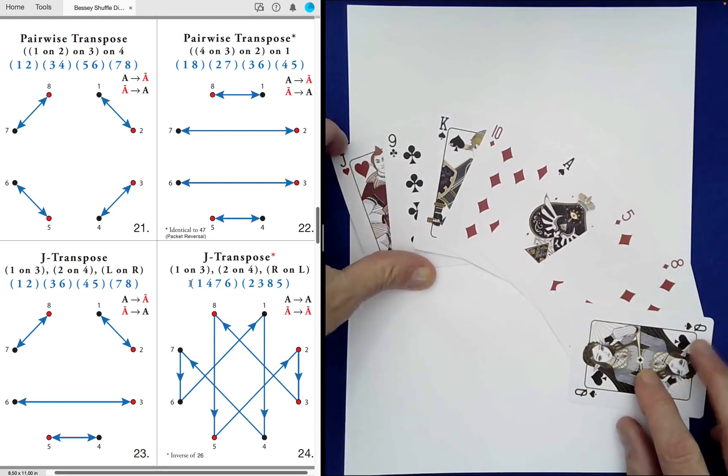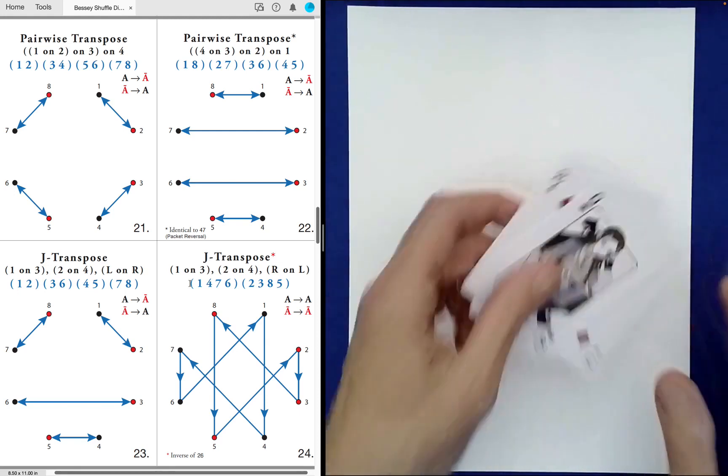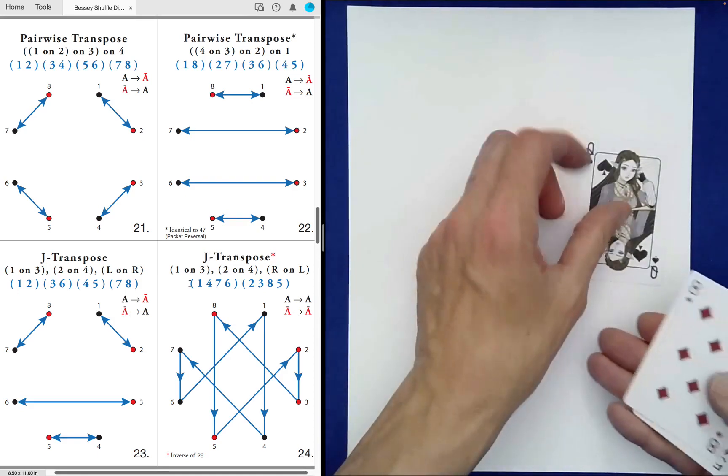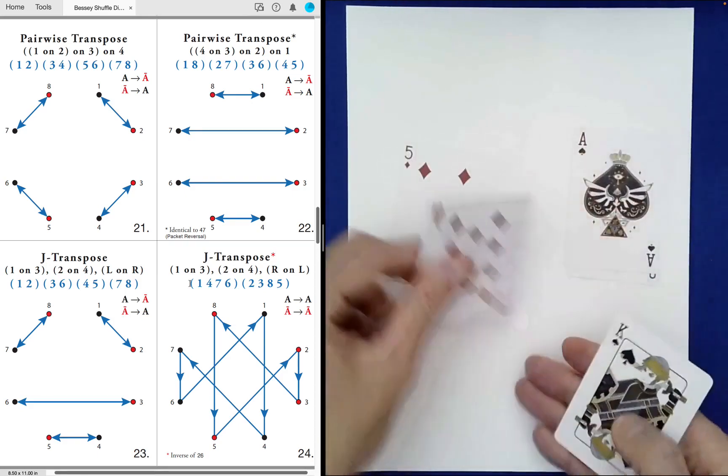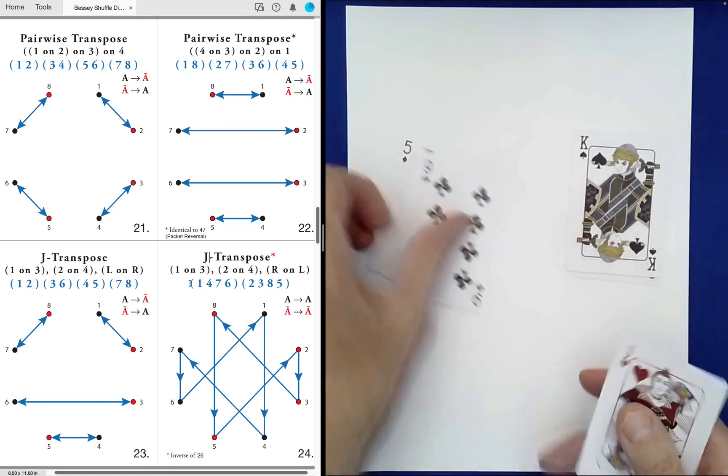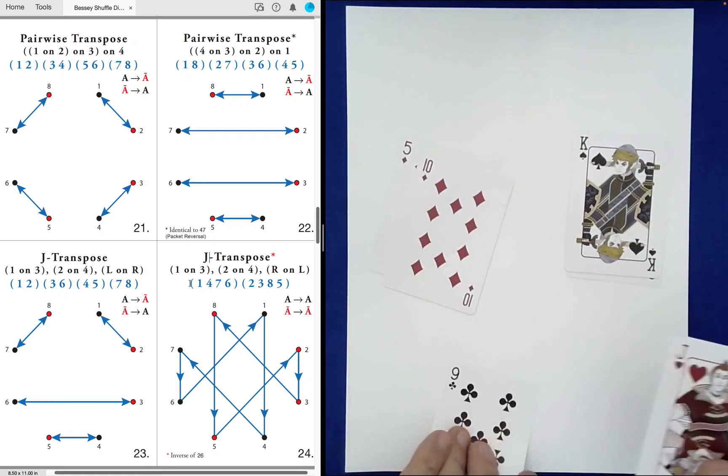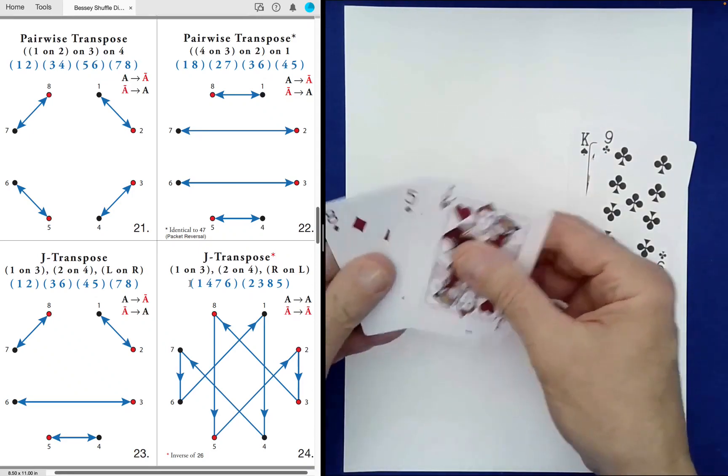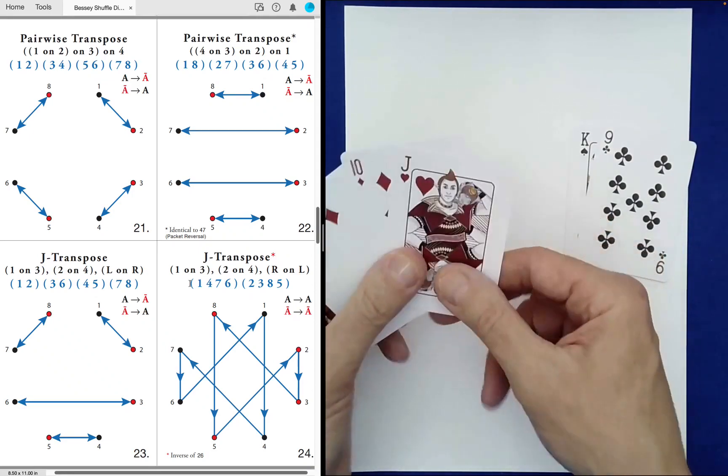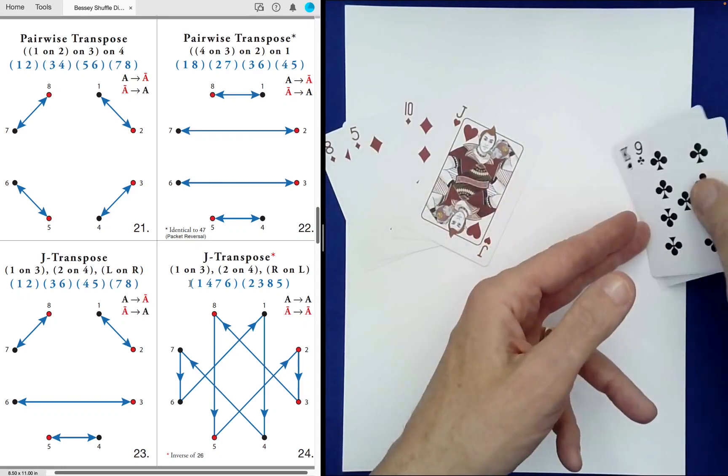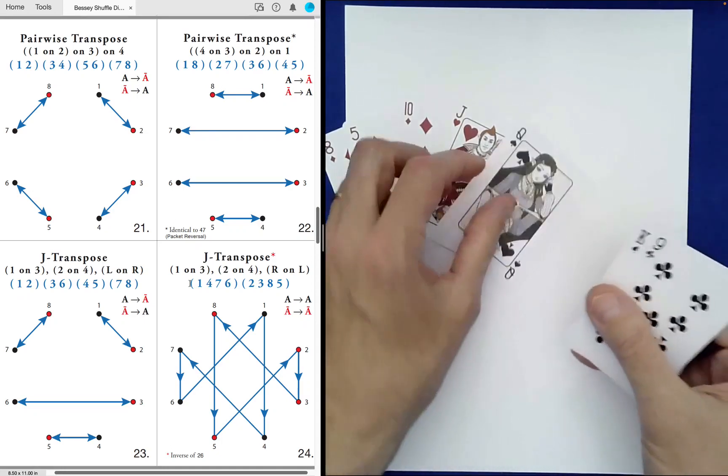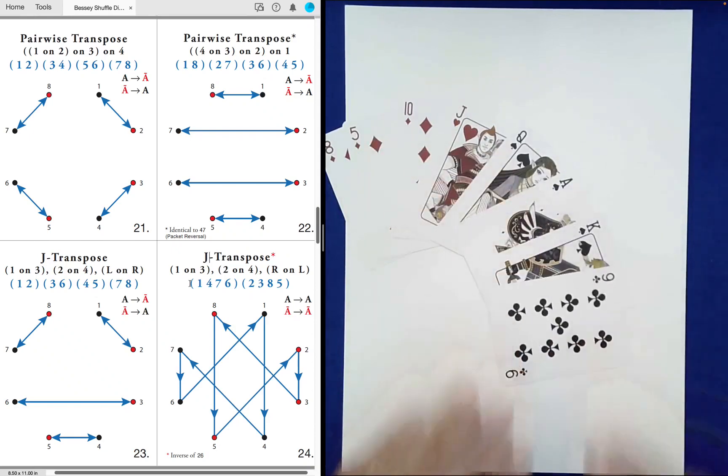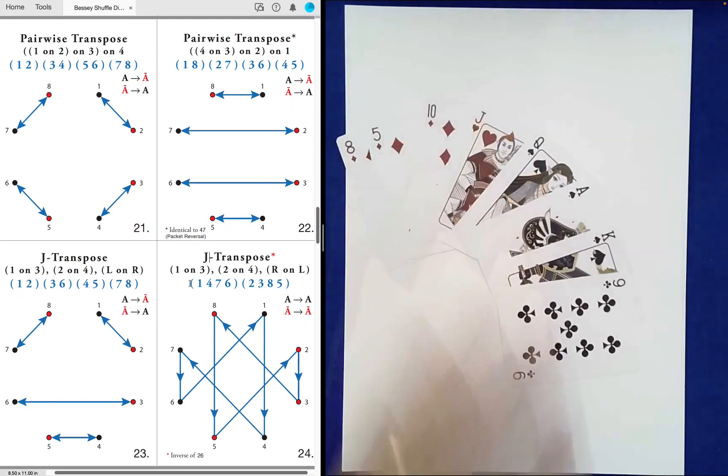But if you want to use that clever technique that Werner Miller, who's one of my subscribers, sent in, and I've used it a few times in some of my videos regarding Bessie sequences, what you can do is begin with, let's say, the four red cards on top, the four black cards on bottom, and maybe even openly show these if you would like. You can just show them that, okay, we have four red cards and four black cards.